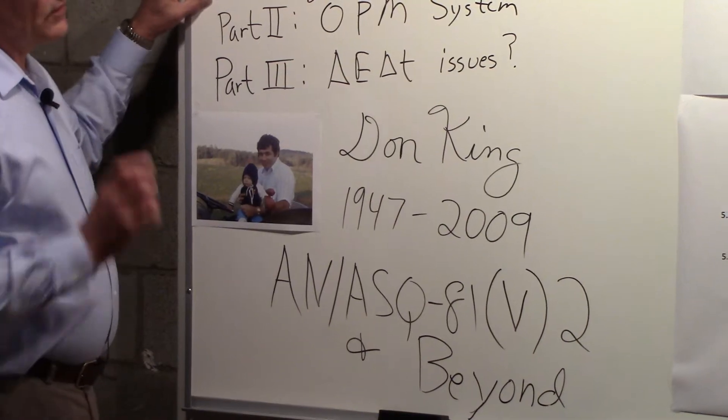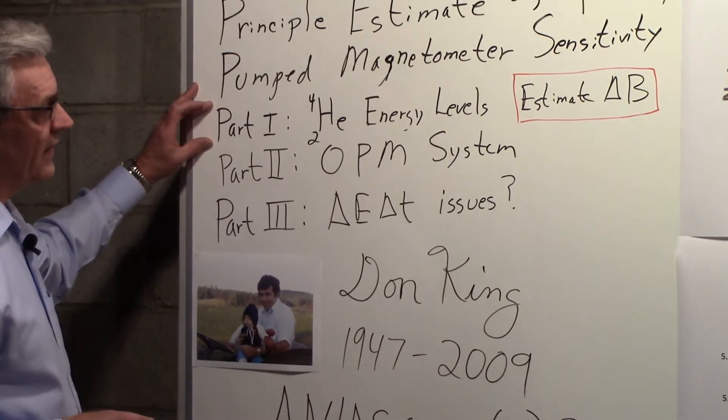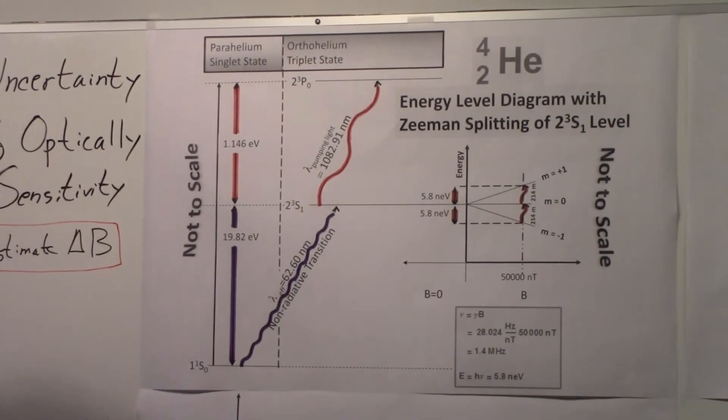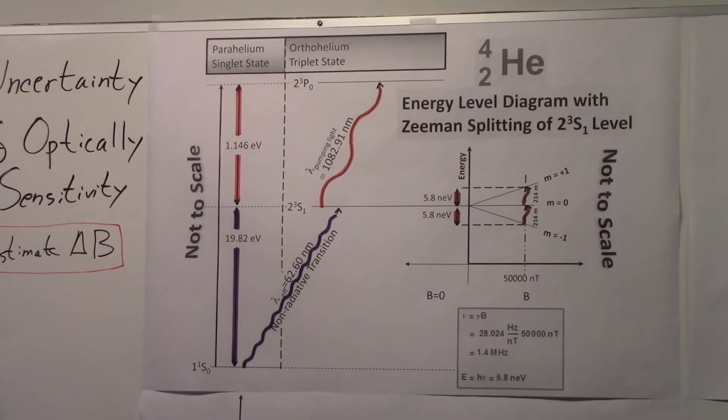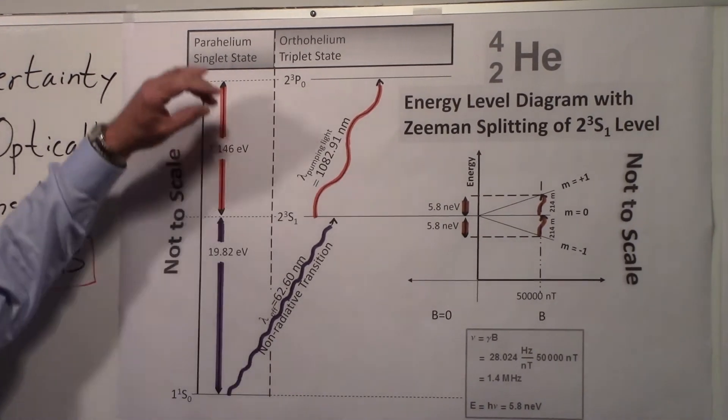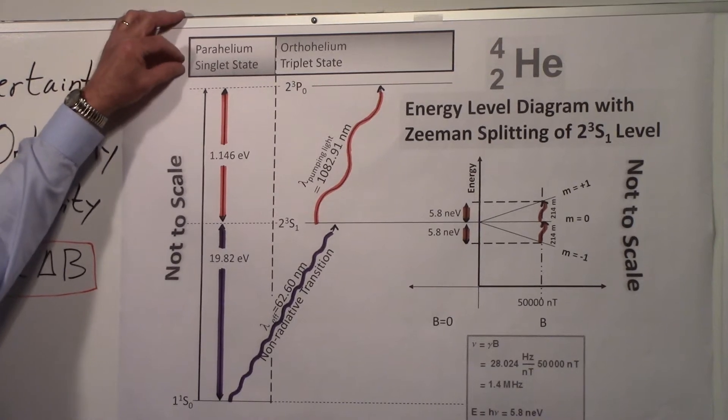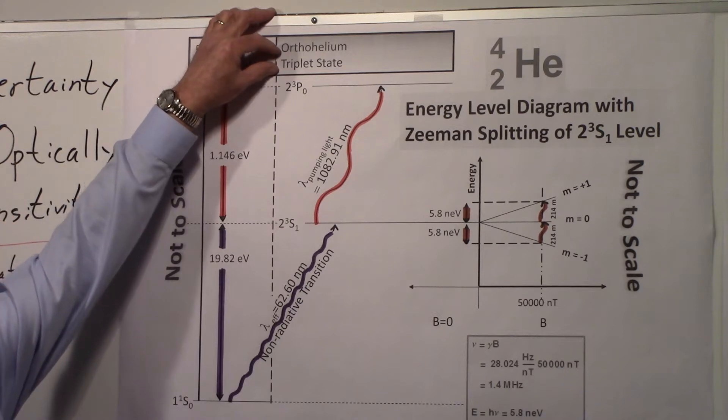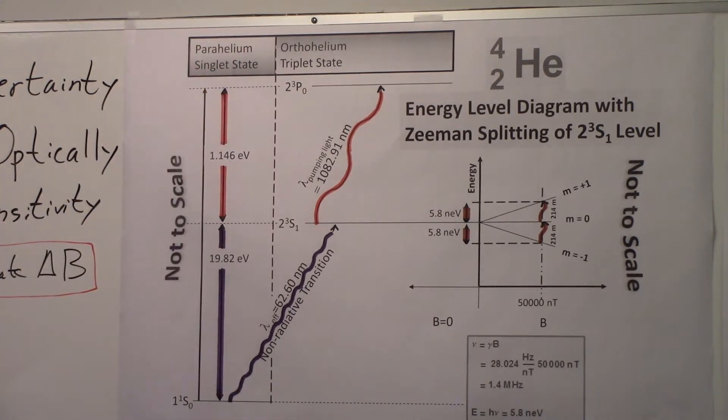In part one now we want to talk about the energy levels. This is a little complicated but it's also not too complicated. You have to realize that helium actually exists in two states. One's called the parahelium singlet state and the other one is the orthohelium triplet state. If you have a balloon filled with helium, those helium atoms would exist in this 1S0 state, singlet state.